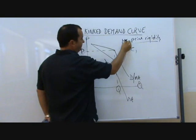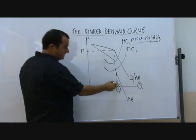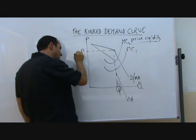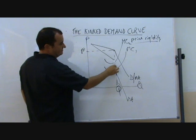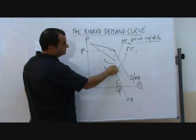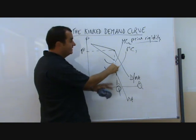MC can rise to MC2, and it hasn't affected the MC-MR position. It's still Q and therefore price is still P. And that only occurs when the MR curve is effectively vertical. The change in cost has not led to a change in quantity. It's not led to a change in the MC-MR position.